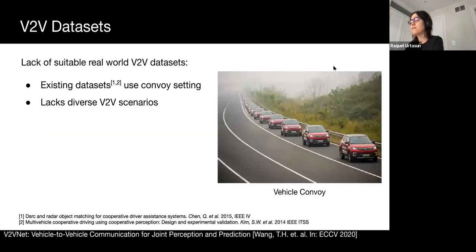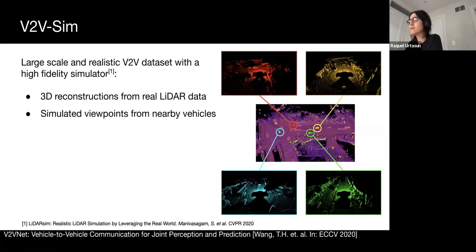When it comes to evaluating V2V methods, there is a lack of suitable real-world datasets. Existing datasets are created in a platoon or convoy setting where cars closely follow one another, so observations are highly correlated and fail to capture the diverse V2V scenarios that will occur in practice — for example, in a convoy setting we will never see SDVs approaching from the opposite direction. To address this, we created V2VSIM, a large-scale V2V dataset using our new high-fidelity LiDAR simulator, which faithfully replicates real-world LiDAR scans. We take the 3D reconstruction of logs of real-world LiDAR strips and simulate them from the viewpoint of other vehicles in the scene, so all other vehicles can act as SDVs. Our SDV topologies directly correspond to real traffic scenarios.